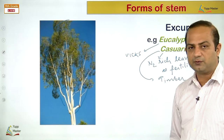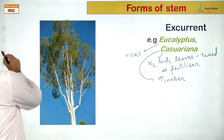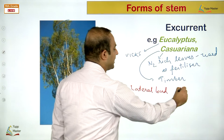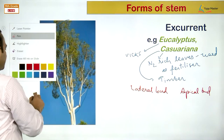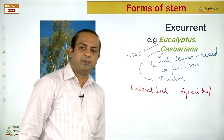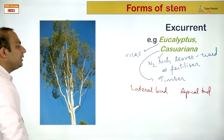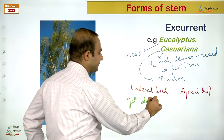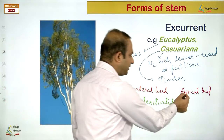The four types of sub-aerial modifications are: runner, stolon, sucker, and offset. Runner spreads on the ground surface — like grasses. Stolon is a basal branch that goes underground and comes out again — seen in strawberry, jasmine, and peppermint. Sucker comes from the underground lateral branch and becomes aerial — seen in Chrysanthemum and pineapple.